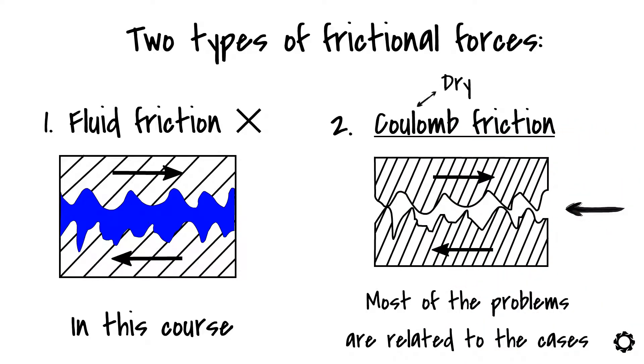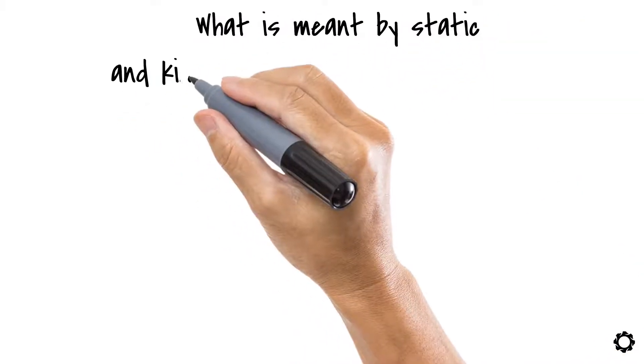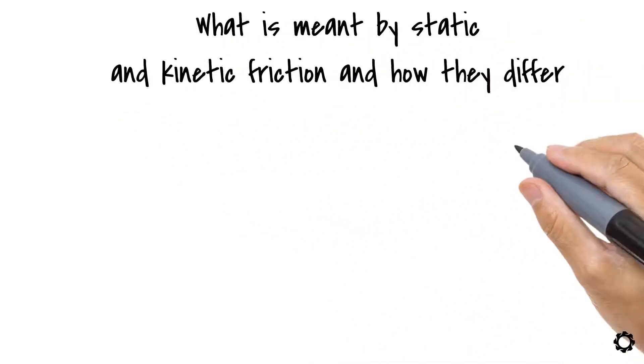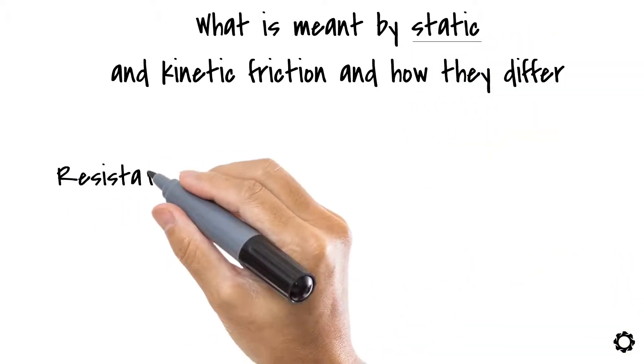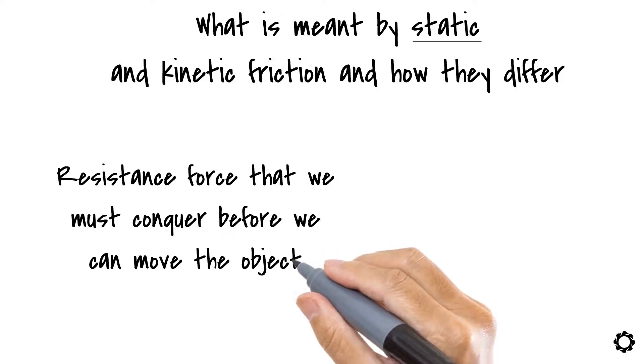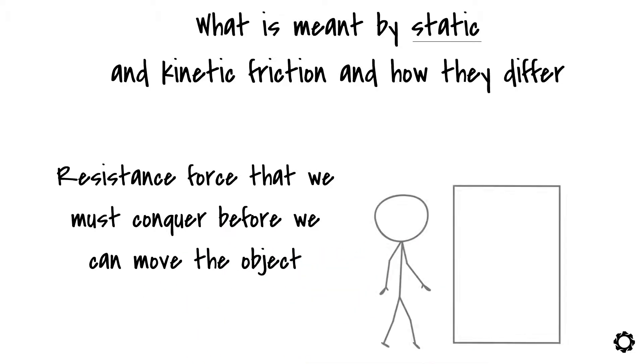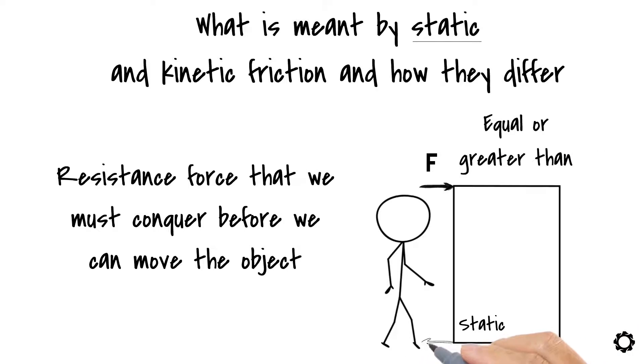For us to understand the concept of friction, we have to know what is meant by static and kinetic friction and how they differ. We can think of the static friction as being a resistance force that we must conquer before we can move the object even slightly. For instance, if we would like to move a block on a ground, we would have to apply a force which is equal or greater than the static friction which acts on the body.